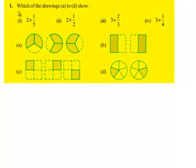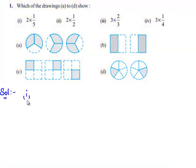Let us move on to the first question in the next exercise. Which of the drawings from A to D show the following fractions? Let us consider the first bit. We need to identify which of the drawings from A to D show 2 times of 1 by 5.